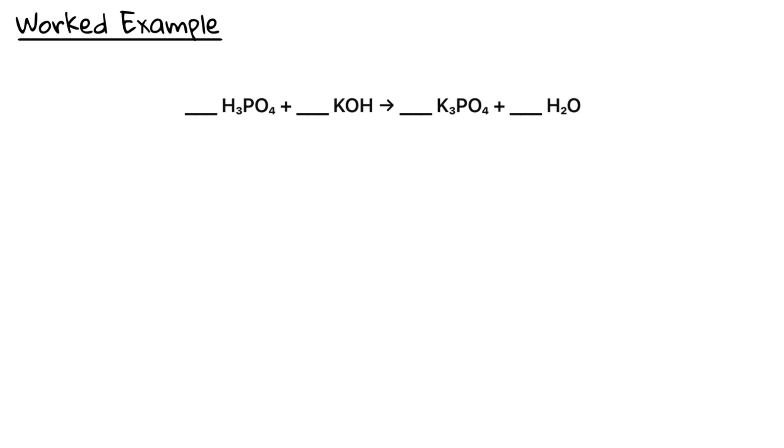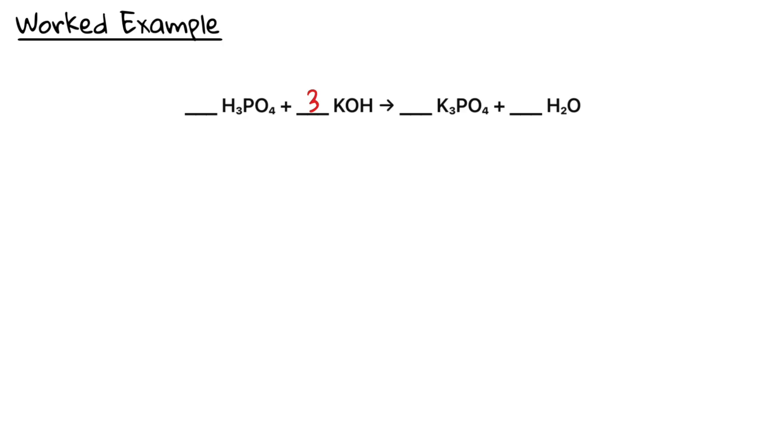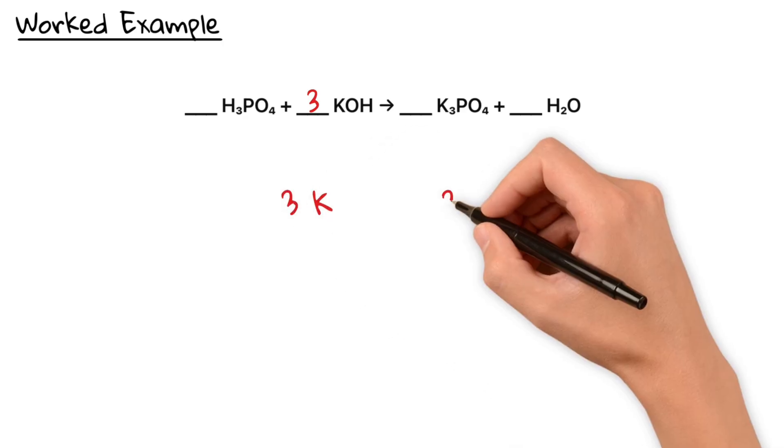And in our example here, that's potassium. On the right, there are three potassium atoms. So we need three potassium hydroxide molecules on the left. Now potassium is balanced.